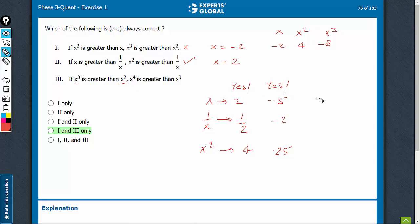So again, cases such as x equals 2, x squared is 4, x cubed is 8, x raised to power 4 is 16. So yes, if x cubed is greater than x squared, x raised to power 4 is greater than x raised to power 3. So even this is going to be correct.